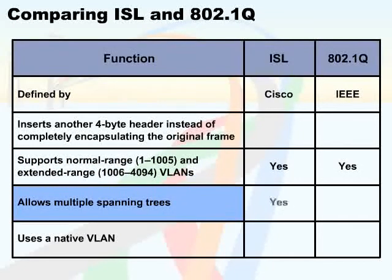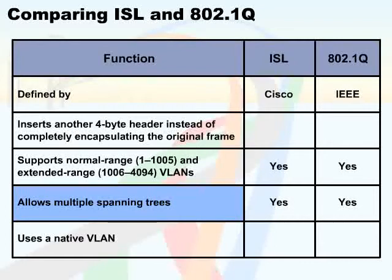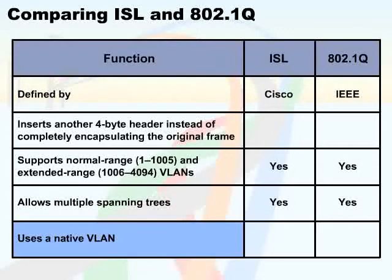Moreover, in both protocols, each VLAN uses a separate instance of STP that has a different implementation on each VLAN. Using a single instance of STP would mean that most of the time, only some links will be used and others will remain idle — those idle links will be used only in the case of a link failure. By using multiple STP instances, we can ensure that different VLANs use different links.